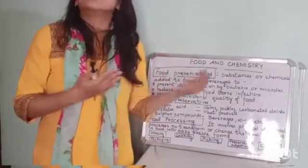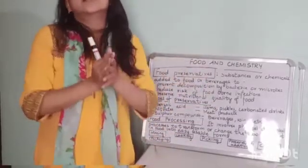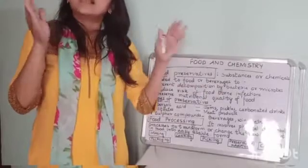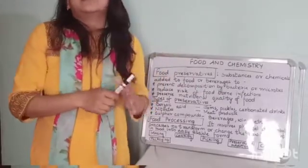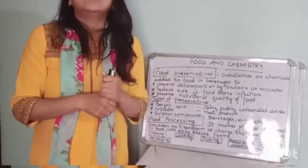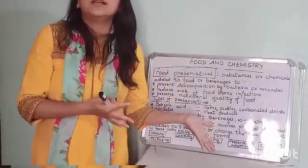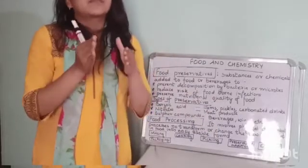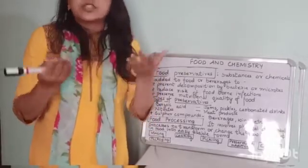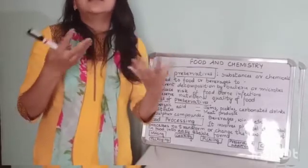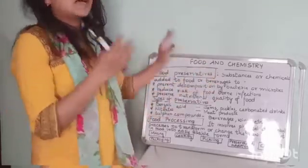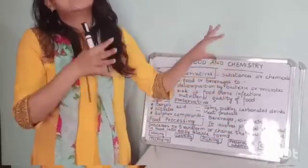Food processing involves physical or chemical processes to transform raw ingredients into a marketable product. It involves many processes like mincing, cooking, pickling, preservative addition, canning, and packaging, after which the products are taken to the marketplace. Food processing is mainly used in the sugar industry, fish processing, meat packaging, vegetable canning, and packing snacks.